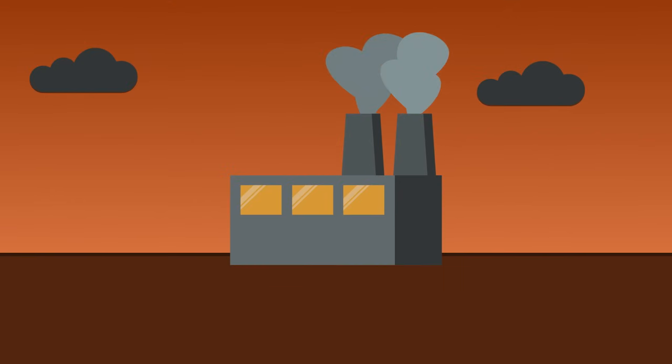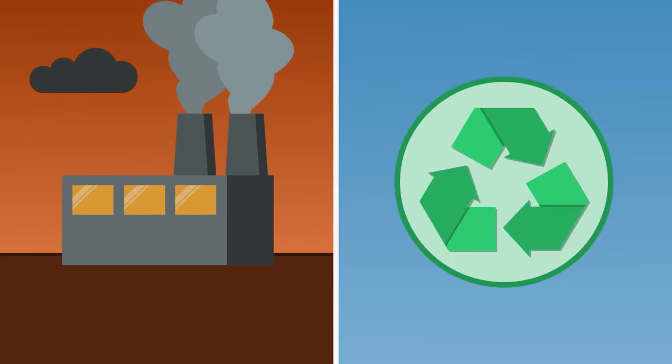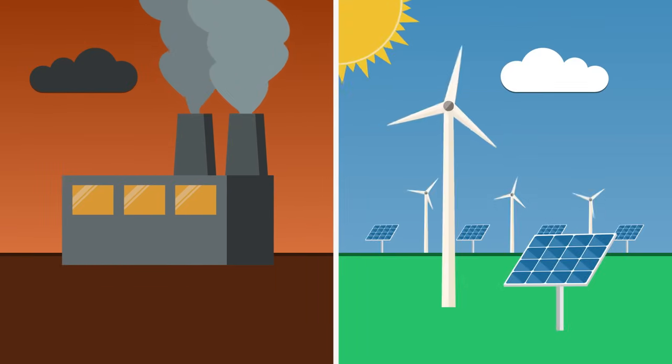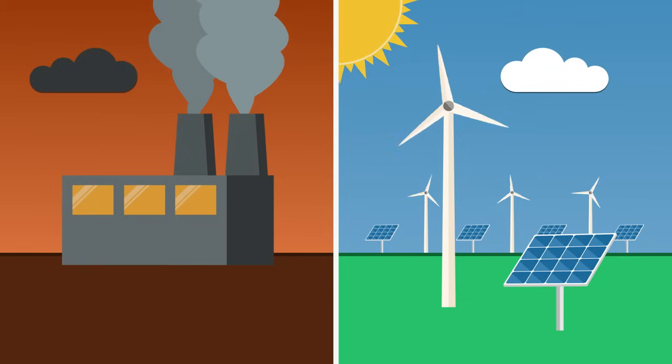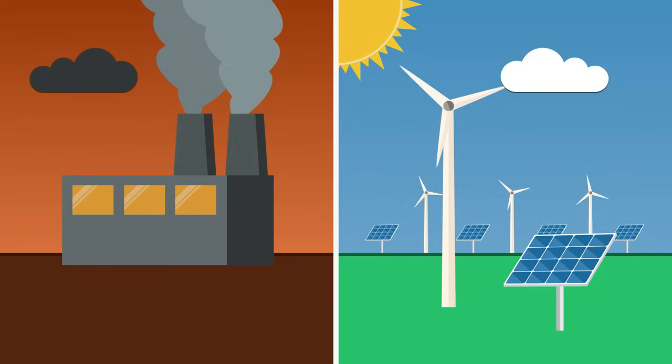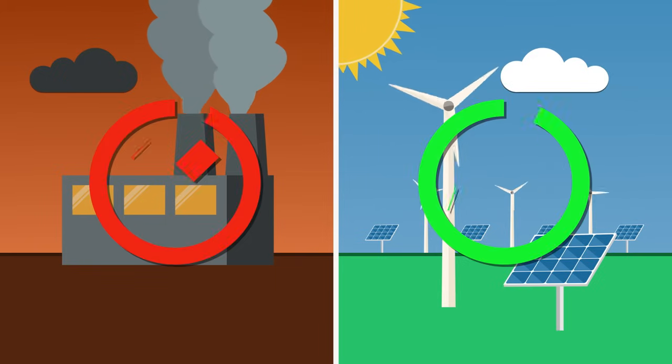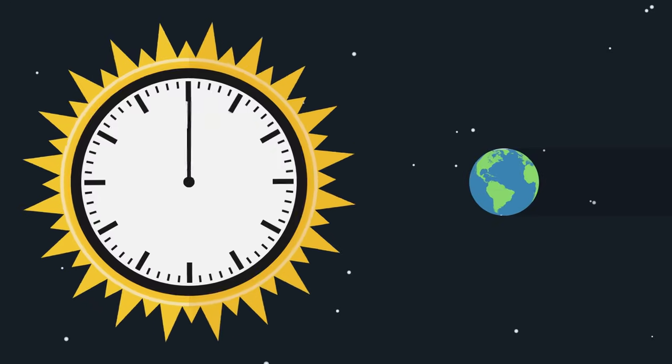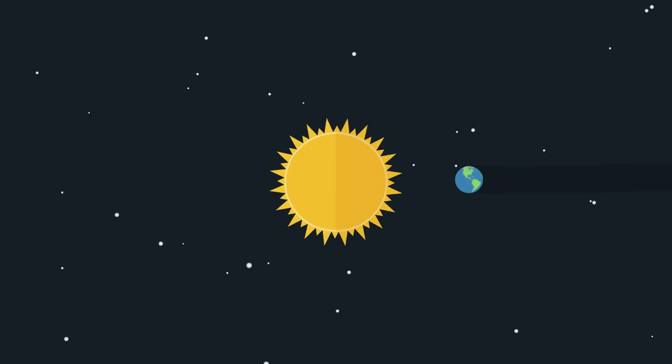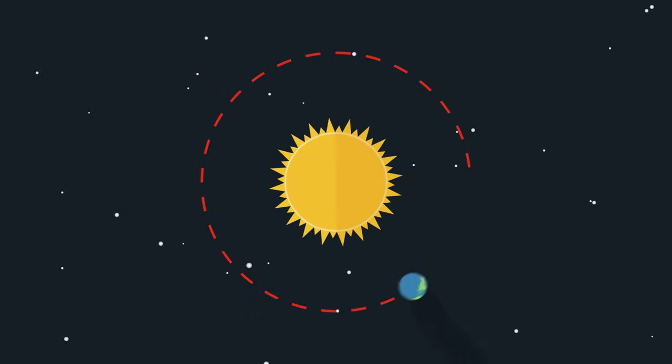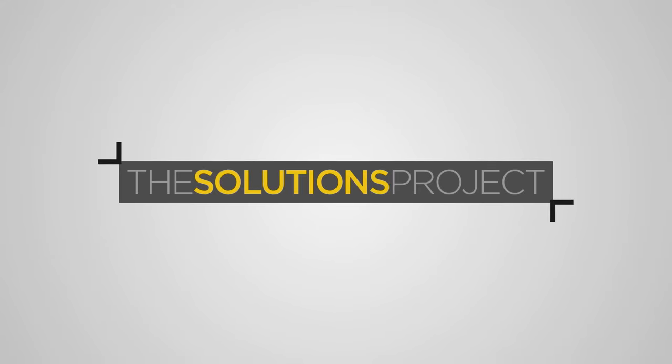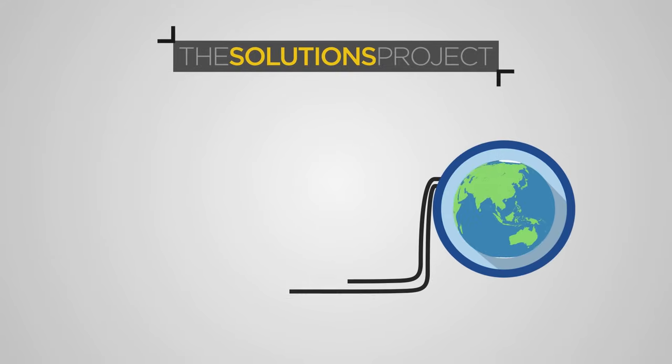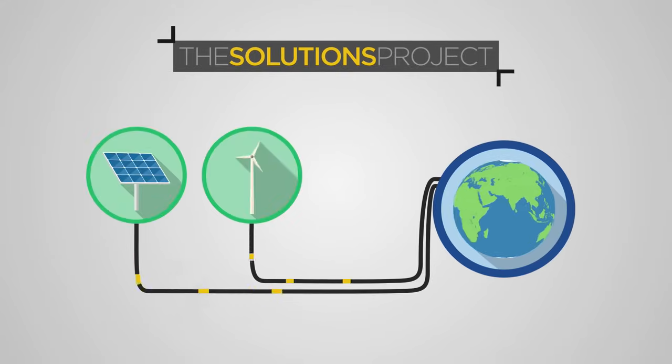Instead of burning fossil fuels, we need to convert to renewable energy such as solar and wind power, which emit zero carbon emissions when operating. Energy from the sun and the wind are infinite. Unlike fossil fuels, we will never run out of them. More solar energy falls on the earth in one hour than all the energy that our civilizations consume in one year. Civil engineers from the Solutions Project calculated that we could power most of the world with only renewable energy if we just actually decided to do it.